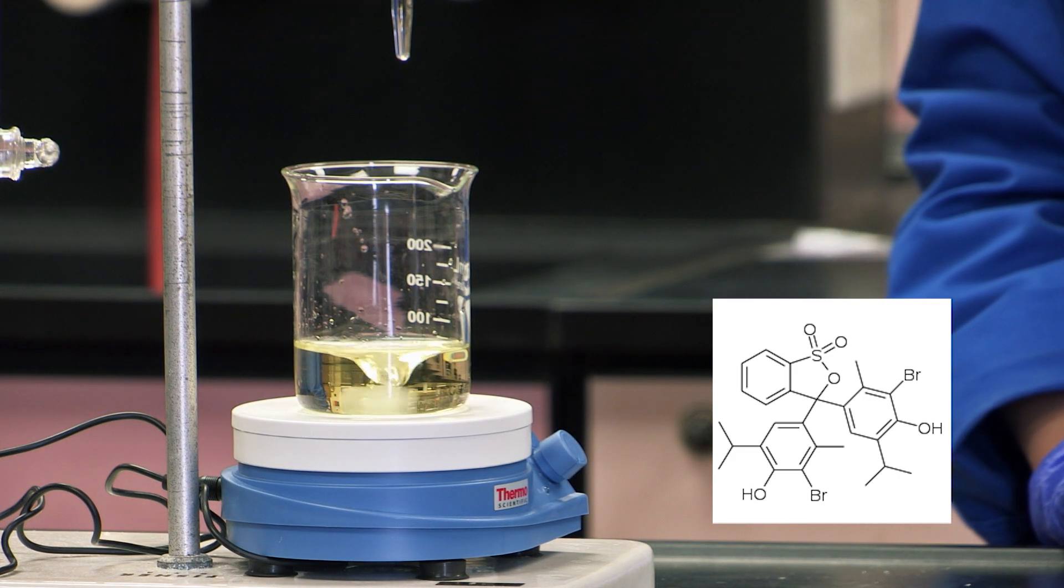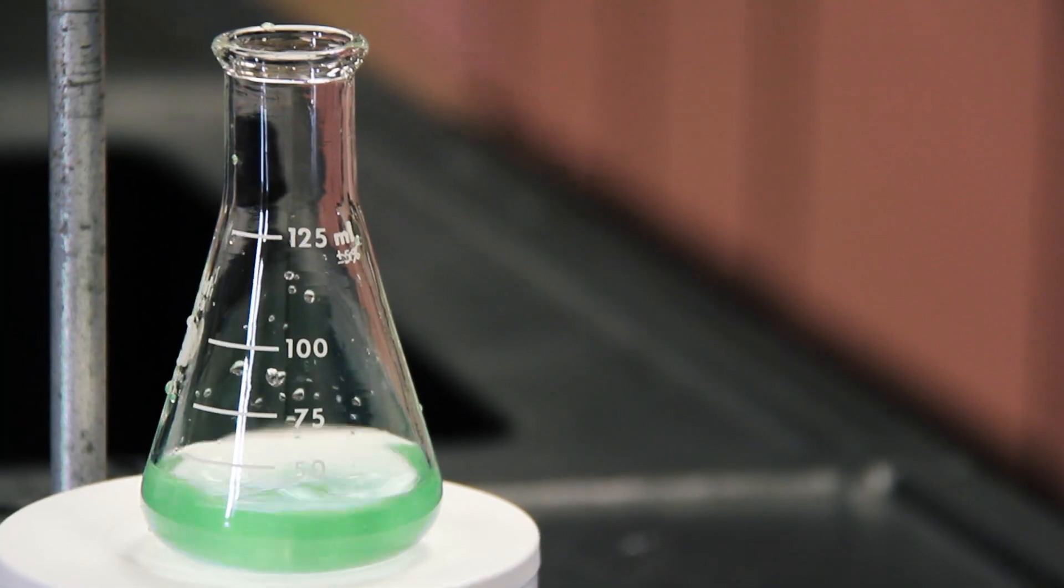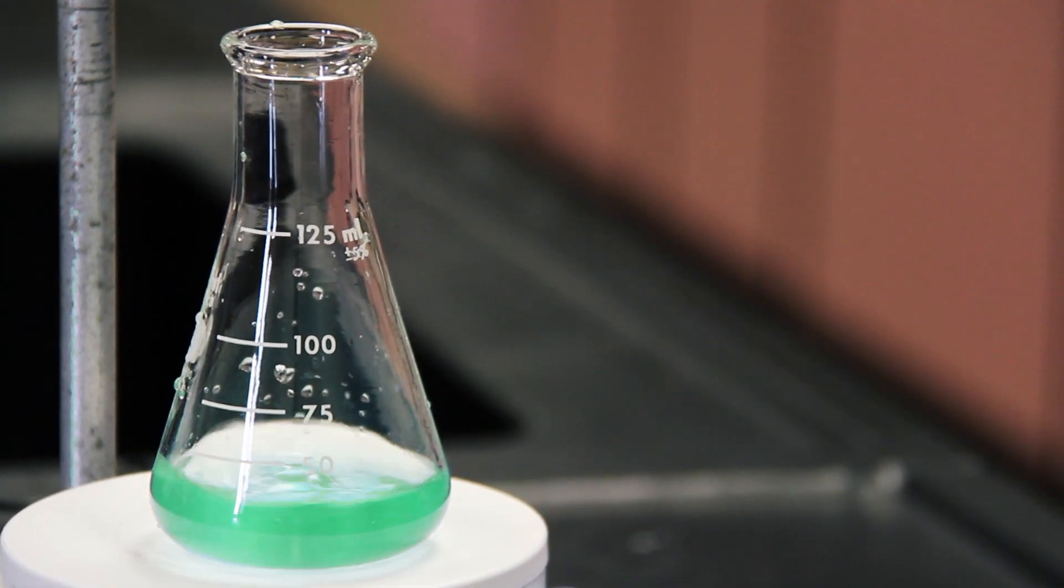When the acid and base have completely reacted with each other, the pH of the solution is neutral. So the bromothymol blue will be a color mixture of yellow and blue. There are many different indicators that can be selected specifically for the titrations you wish to perform.